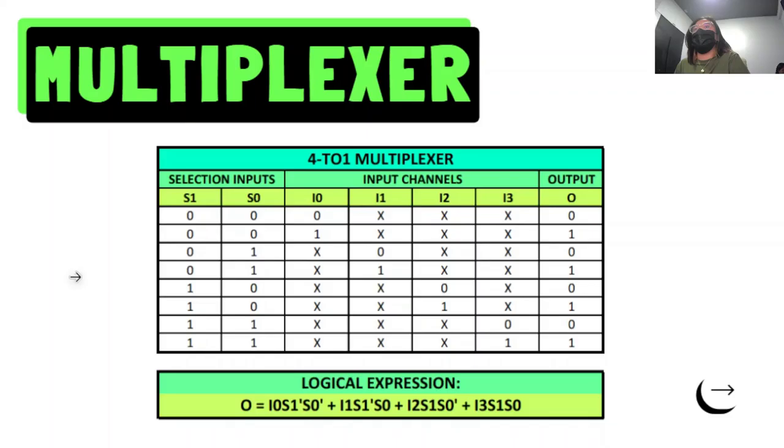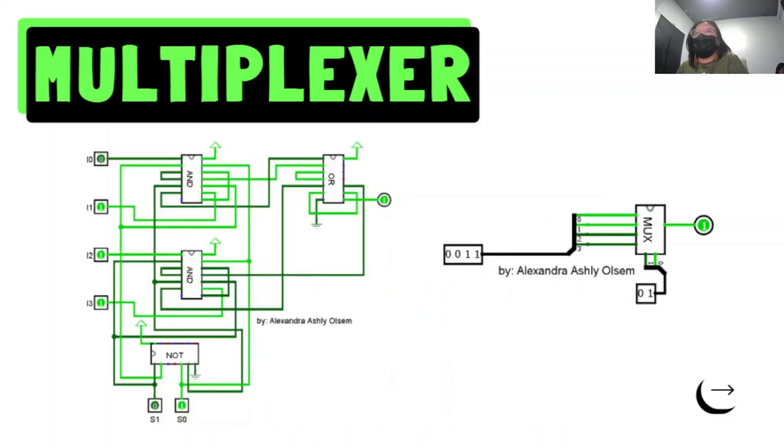For the circuit that we have done, we used AND, OR, and NOT gates or IC circuits, integrated circuits. Here are the input channels, these are the selection inputs. So here we got I1 and I2 and I3 is one, and then I0 is zero, and S1 is zero and S0 is one, we get an output of one.